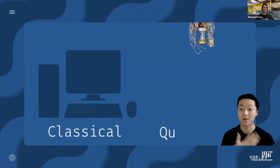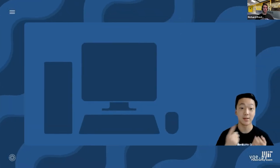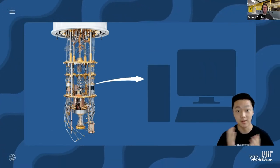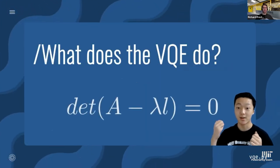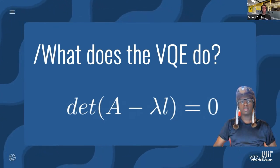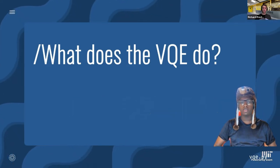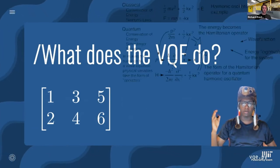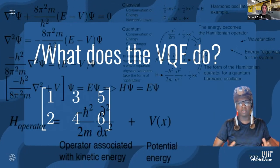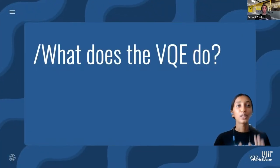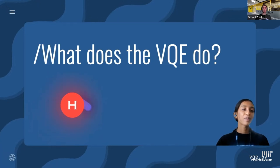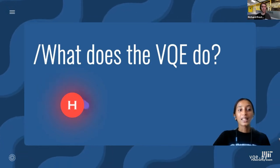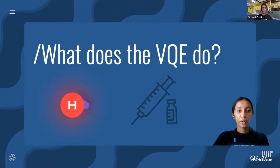These types of algorithms first initialize some parameters, do some measurements, and then use an optimizer to get new, better parameters to repeat the process with. The VQE helps find the minimum eigenvalue of a matrix. When we apply the VQE to a matrix that represents the energy of a molecule, the algorithm can find the upper bound of the ground state energy of a Hamiltonian, which is generally the first step in computing the energetic properties of molecules and materials. In simpler terms, it helps simulate molecules so scientists can calculate things specifically for medical or chemical applications. The scope of the VQE is therefore very wide, being potentially relevant for drug discovery, material science, and chemical engineering.